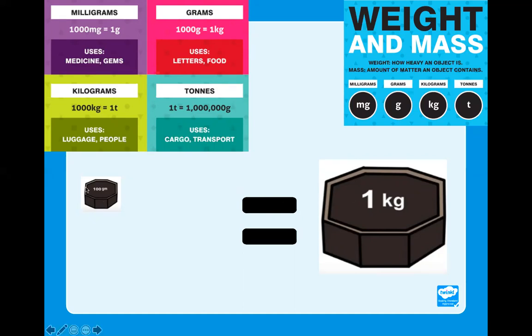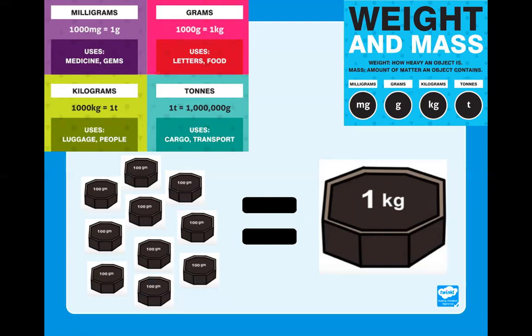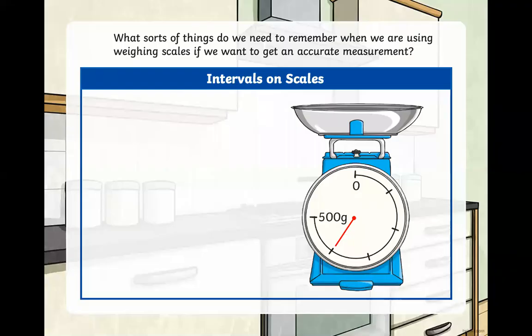So here we have a hundred grams and one kilogram. Obviously, those are not to scale. But think about if it takes a thousand grams to make a kilogram, how many of these hundred grams would I need? Well, we can count in hundreds. So 100, 200, 300, 400, 500, 600, 700, 800, 900, a thousand. So it would take 10 of these 100 grams to make the same equivalent as a kilogram.